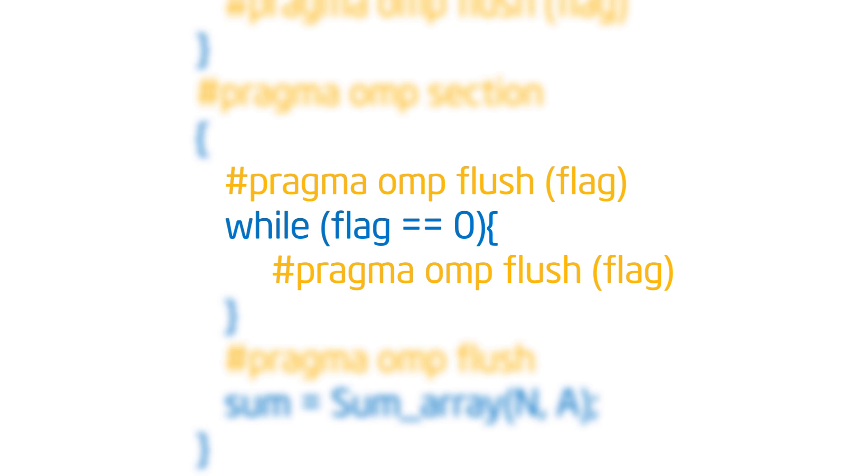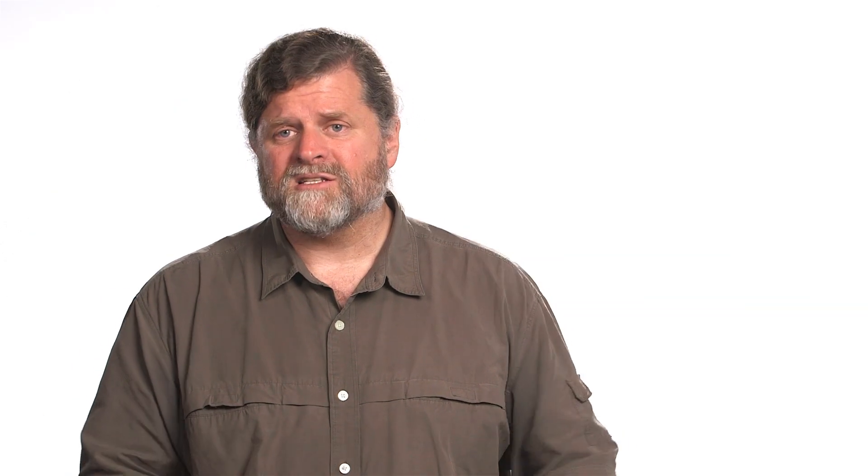Now, because I used flush of just the flag, remember a flush, a general flush is really, really expensive. So I wanted to save myself a headache by just flushing the flag value. What that means is, I could upload the new value of flag and never refresh the value of A. Remember, flush sets, if they're a non-overlapping flush set, they can move past each other.